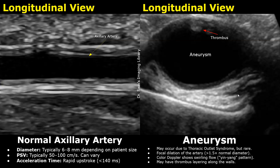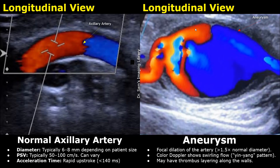Aneurysm is the abnormal focal dilatation of the axillary artery. It is rare, but it may occur due to thoracic outlet syndrome. In this image, we can see an increased diameter of the artery. A thrombus is more prone to getting attached to the arterial wall in aneurysm. When color Doppler is applied, we will see a yin-yang swirling pattern — almost half of the aneurysm has a blue color and the other half has a red color. This is the yin-yang sign seen in aneurysms.